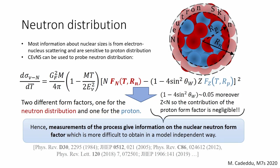First, it can be used to measure the nuclear size. This was traditionally done using electron-nuclear scattering, which is sensitive to proton distribution only. As we learned before, neutrons in the nucleus contribute most to the CEvNS cross-section. That's why CEvNS can be used to probe the neutron distribution in the nucleus.